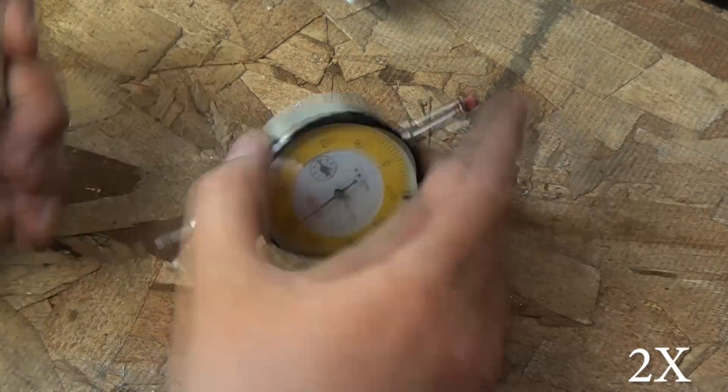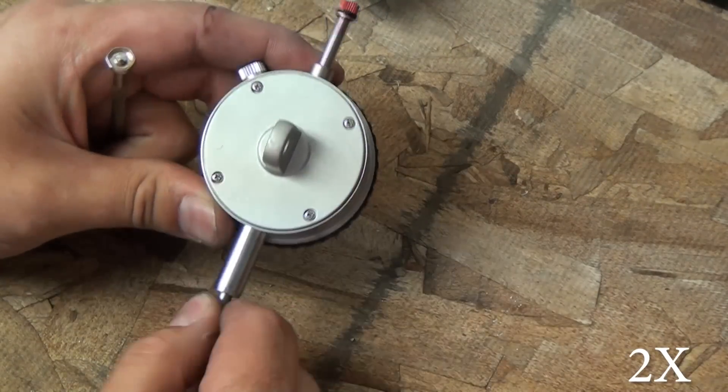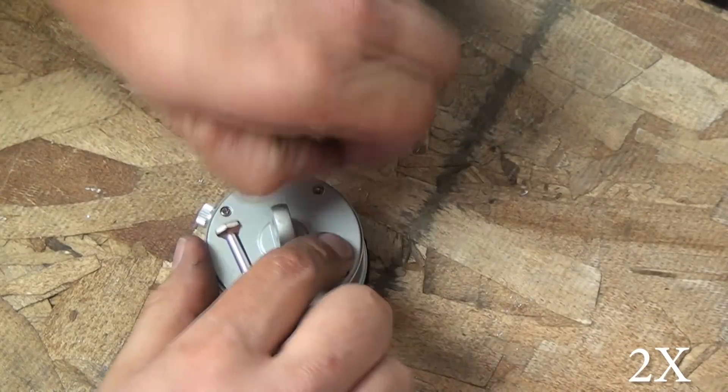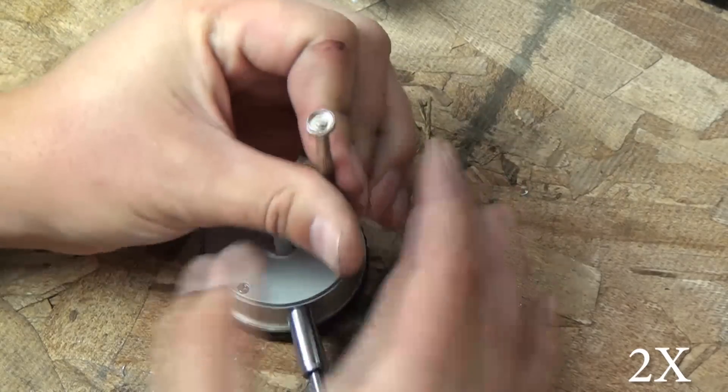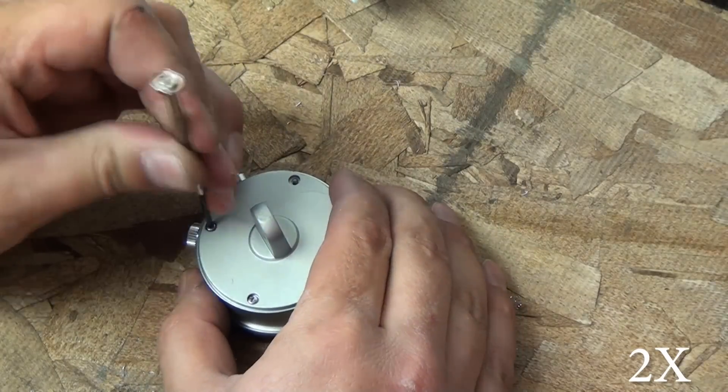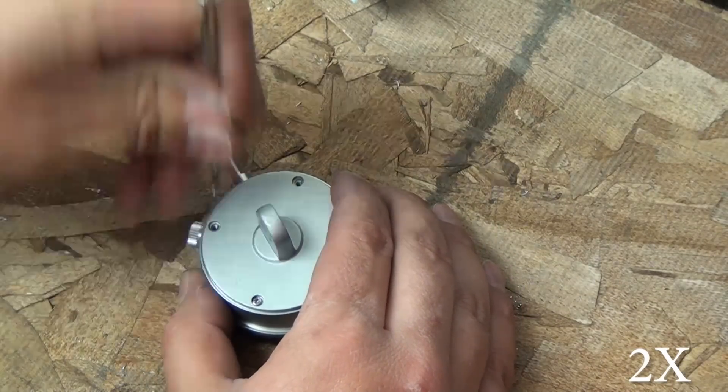Hey guys, I mentioned in an earlier video that I had dropped my dial indicator onto the concrete floor from about three or four feet up and rendered it completely non-working. It's been sitting on my bench for a couple of weeks making me sad because every time I look at it I just think about how I don't have a dial indicator anymore.